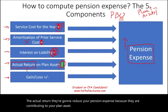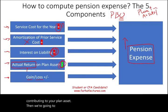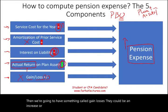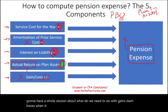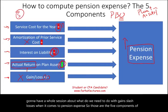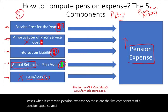Then we have something called gains/losses — they could be an increase or a decrease. We will not be using them in this example because we're going to have a whole session dedicated to what we need to do with gains/losses when it comes to pension expense. Those are the five components of pension expense — this is a quick review.